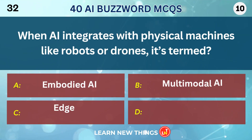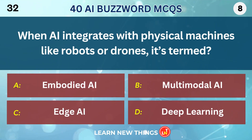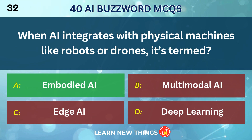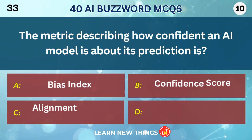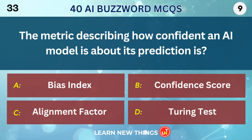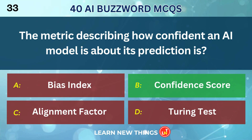When AI integrates with physical machines like robots or drones, it's termed Embodied AI. The metric describing how confident an AI model is about its prediction is the Confidence Score.